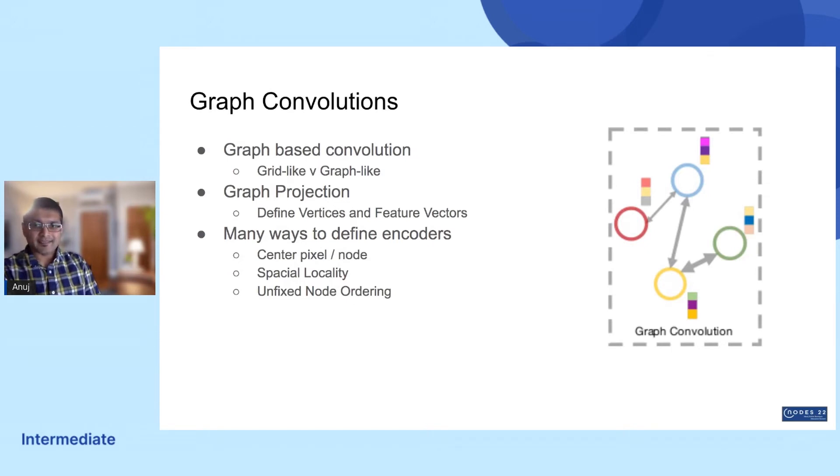Spatial locality: graphs can be arbitrary in size and have a complex topology, so determining locality can be tricky. And unfixed node ordering: the order in which you label your vertices can be non-deterministic. It can be a challenge, but in the case of CNNs, it can also be considered an interesting data augmentation technique depending on the task.